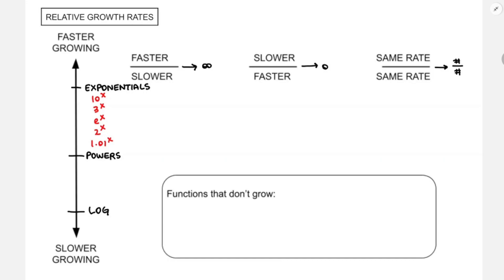For powers, these are like x to some number: x to the 10 grows faster than x squared, faster than x, faster than the square root of x. And 1.01 to the x — the slowest growing exponential — does eventually grow faster than the fastest growing power function. So 1.01 to the x does grow faster than x to the 999. I'll be able to show you why that's true in about a month and a half, once we learn about L'Hopital's rule.